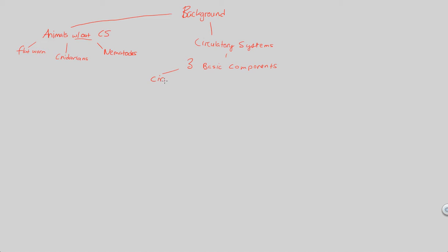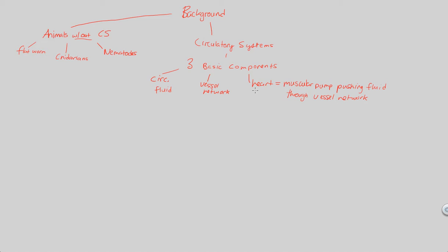The three basic components are as follows. A circulatory system must have some sort of circulatory fluid. There must also be a vessel network — vessels are just places where circulatory fluid can flow through. And a circulatory system must include a heart, which is a muscular pump that pushes the circulatory fluid through the vessel network. The heart essentially drives both the fluid and the vessel network simultaneously.